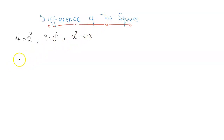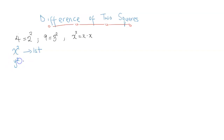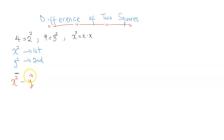So the difference of two squares basically establishes a relationship between the difference of two square numbers. For the sake of generalization we are going to consider two square items: x squared as the first squared number and y squared as the second square number. And we know what difference means in mathematics — difference is a subtraction. So the difference of two squares is going to be x squared minus y squared, where the negative sign represents the difference.